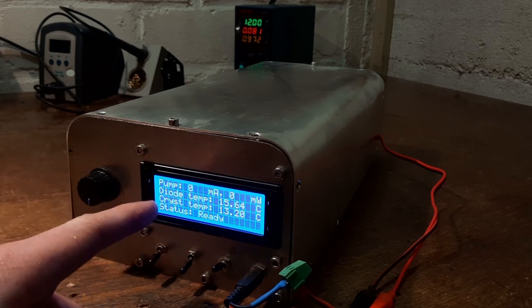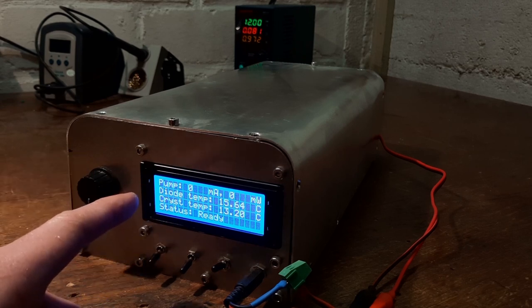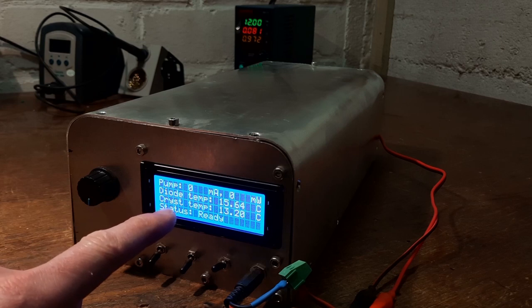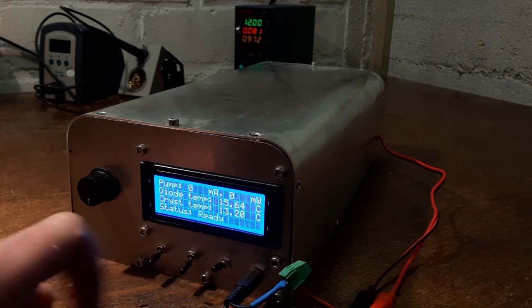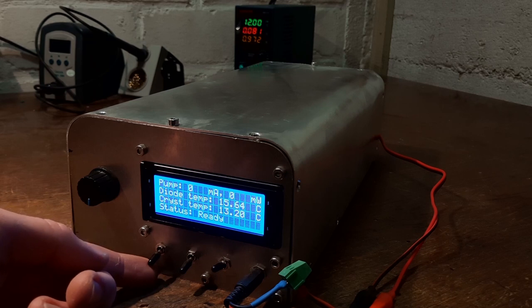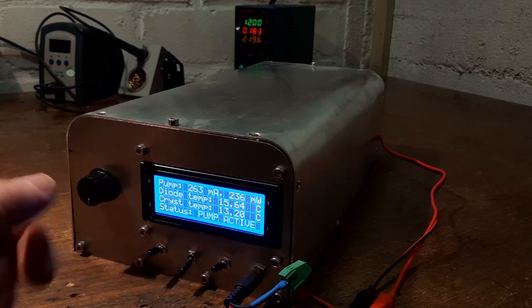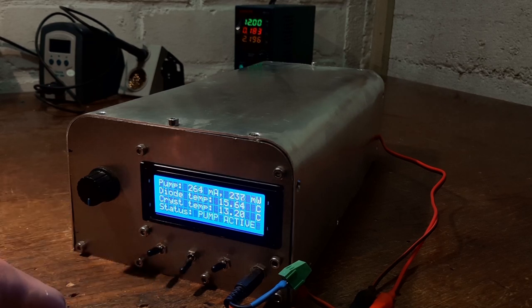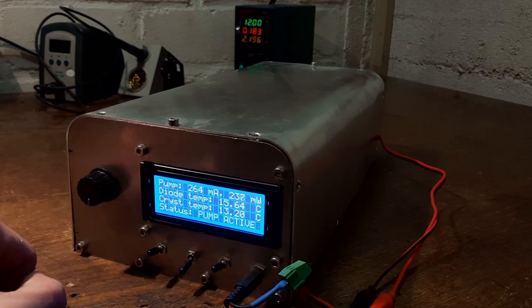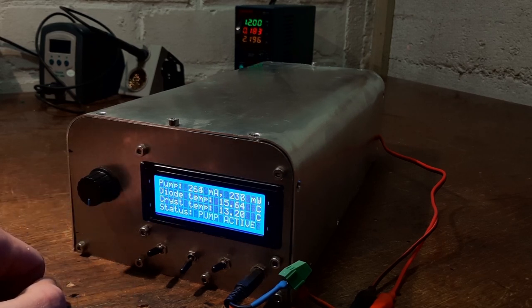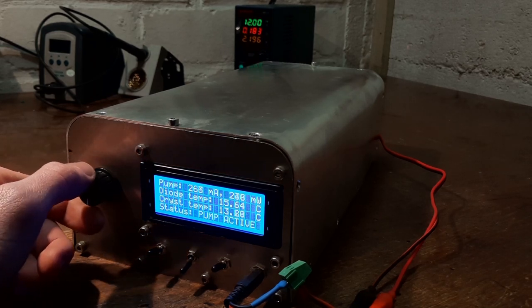I've got the temperatures of the diode and the crystal. It's quite cold in this basement, and the status is ready. Now this left switch turns on the pump. As you can see, we've got about 260 milliamps and about 230 milliwatts of optical power. If I turn this on, you can see that the laser starts lasing in the background.